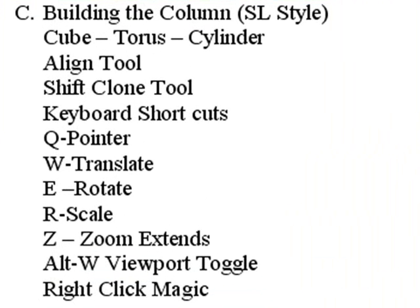Let's build our column — what I call second lifestyle, building with primitives. We're going to use a cube, a torus, and a cylinder. I'll show you how to use the align tool, the shift clone tool, and a number of keyboard shortcuts: Q for the pointer, W for translate, E for rotation, R for scaling, Z for zoom extents, Alt-W to viewport toggle, and right-click magic — if you haven't let go of your mouse yet, you can right-click to return to where you started.